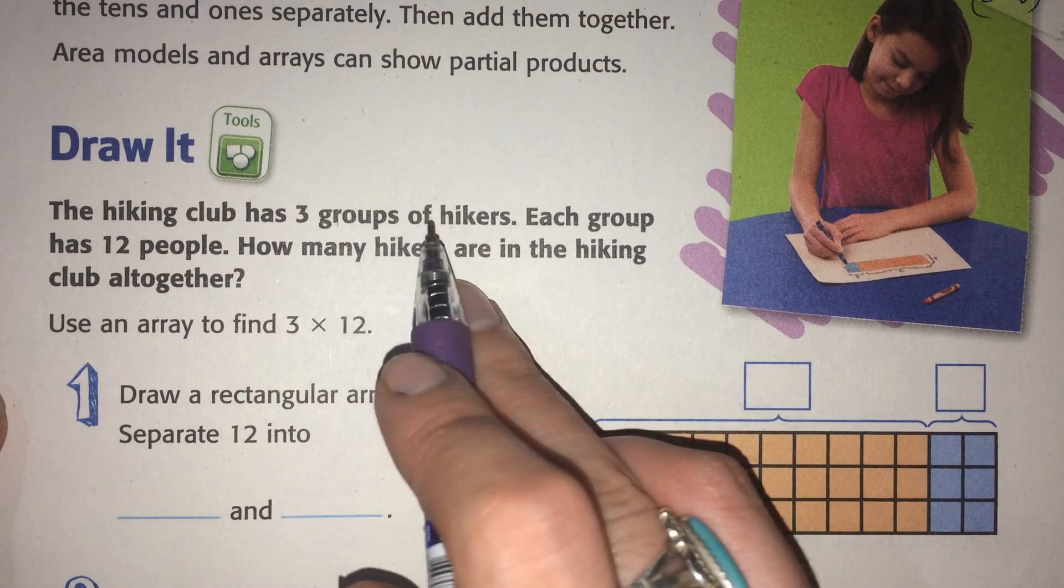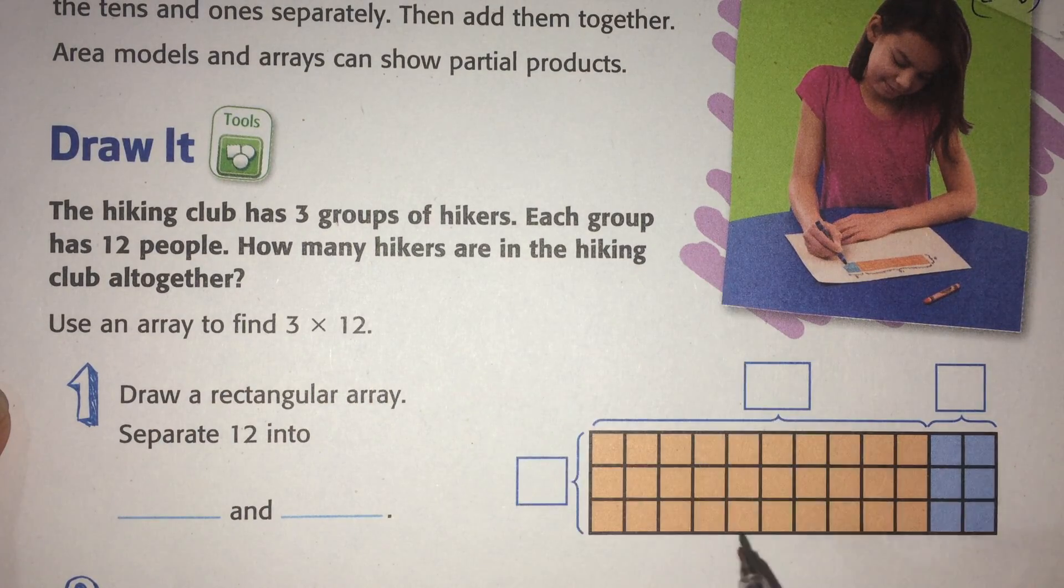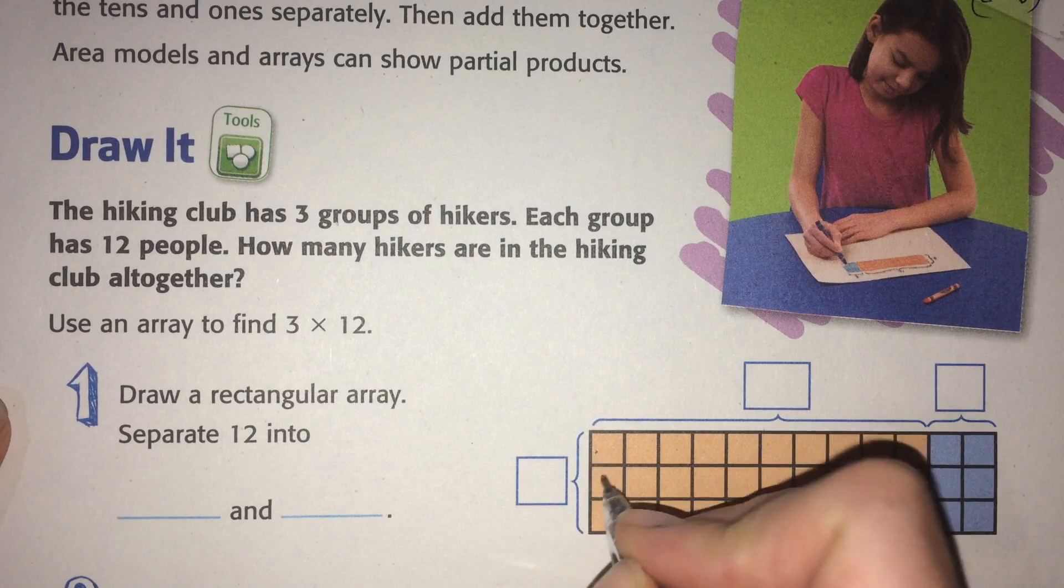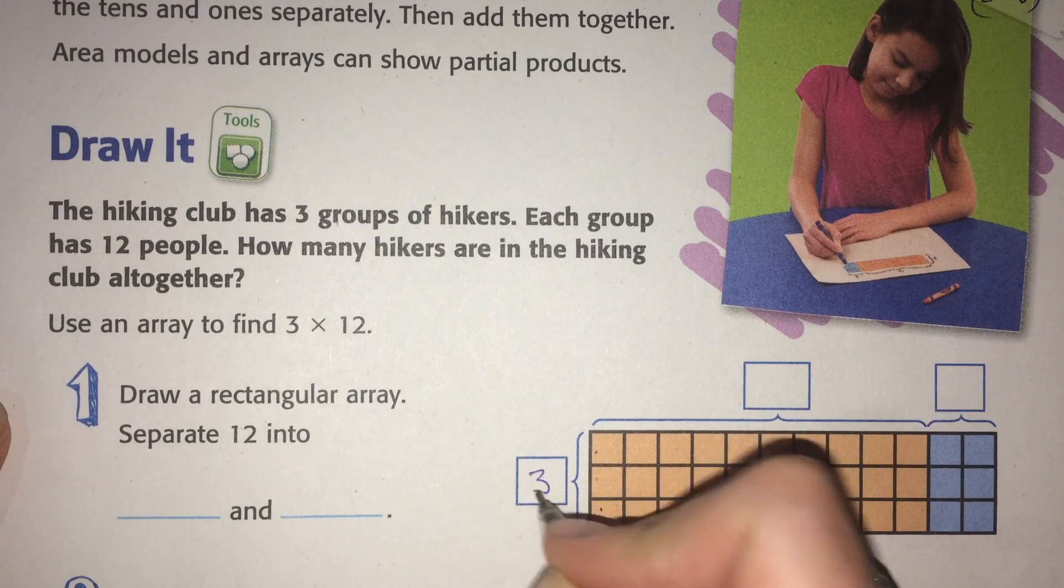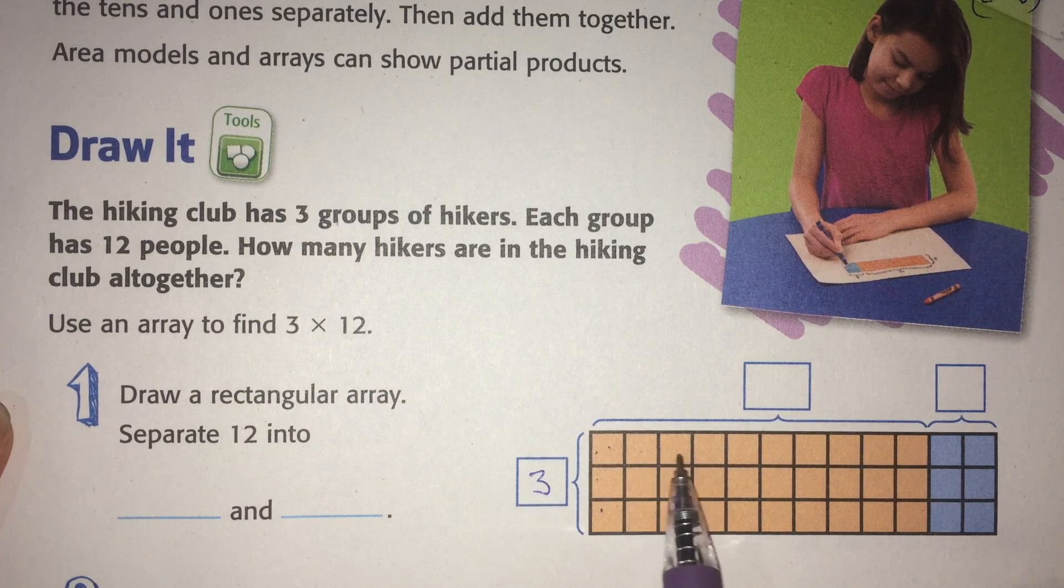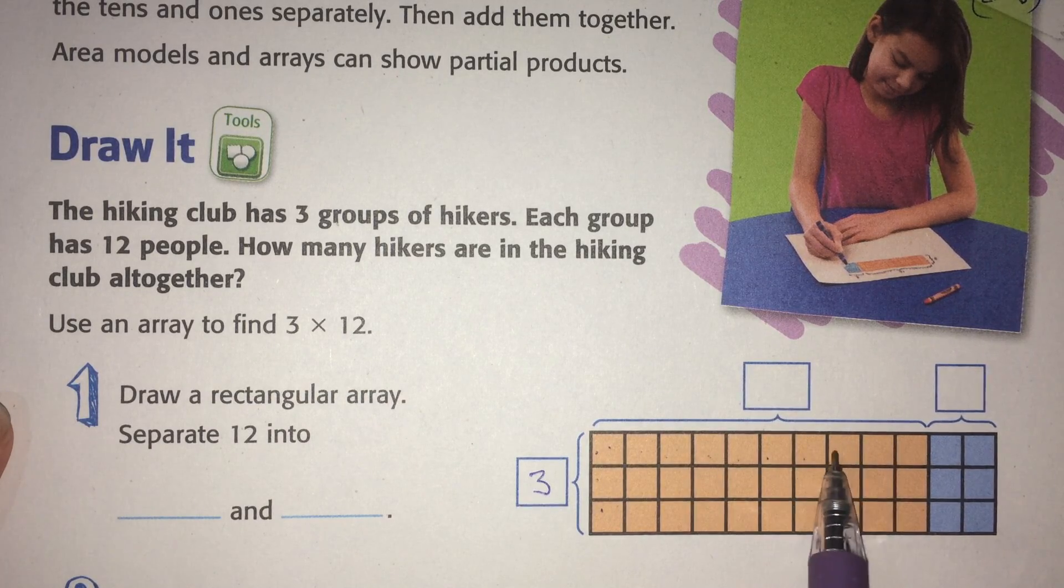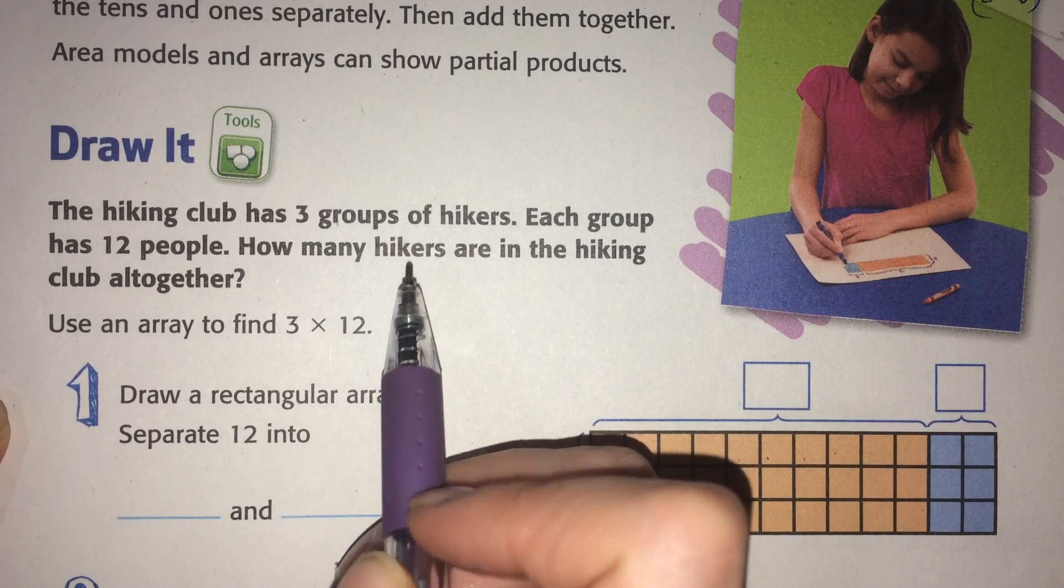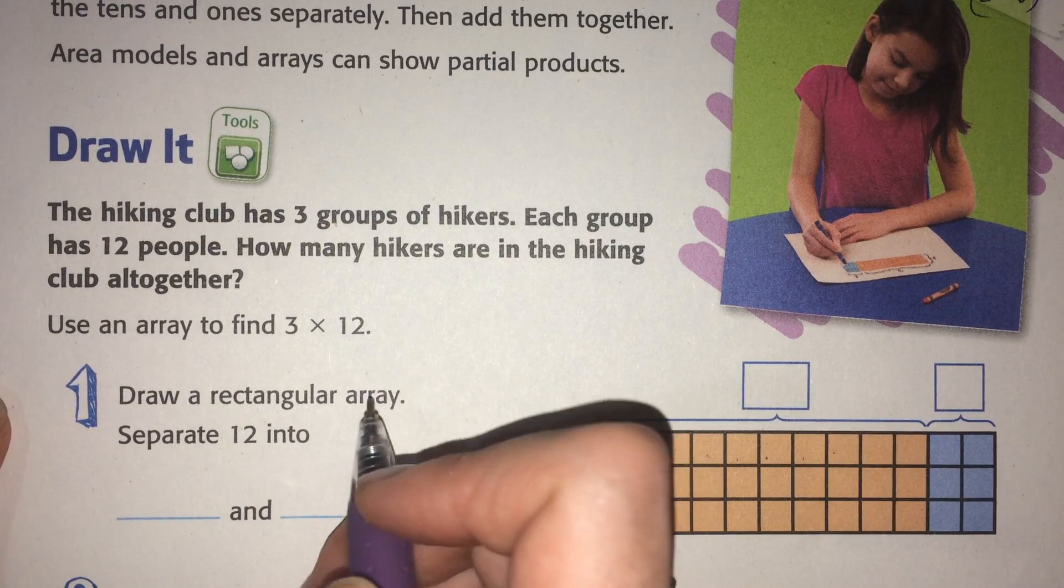The hiking club has 3 groups of hikers. You see that here: 1, 2, 3. Each group has 12 people, and you see that here: 1, 2, 3, 4, 5, 6, 7, 8, 9, 10, 11, 12. How many hikers are in the hiking club altogether?